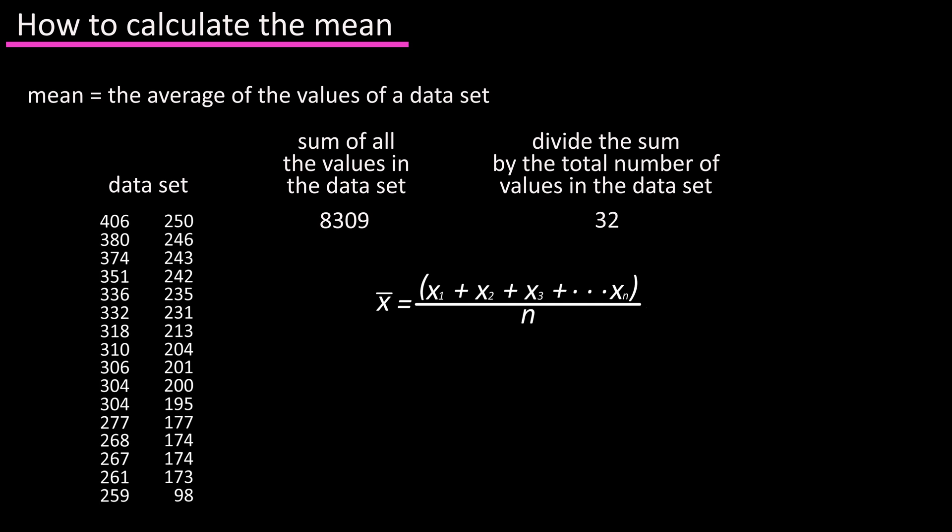The formula for the mean is often written as x bar equals x1 plus x2 plus x3 dot dot dot plus xn divided by n.